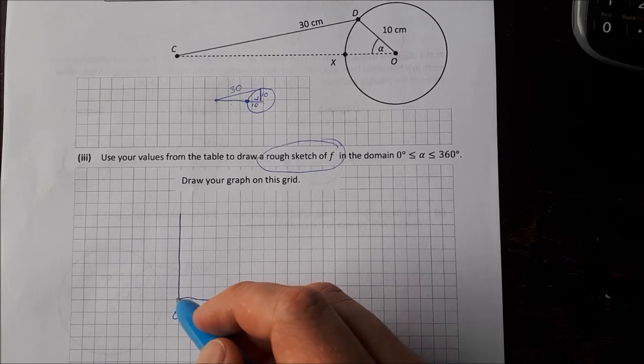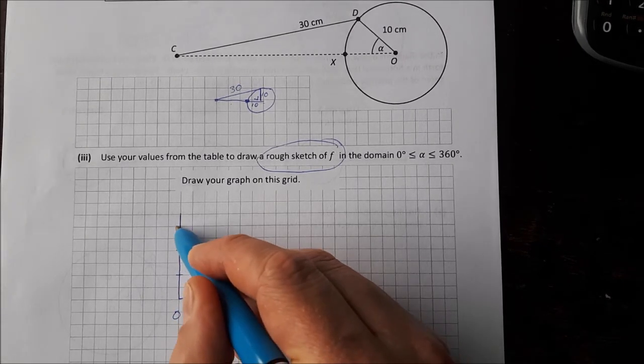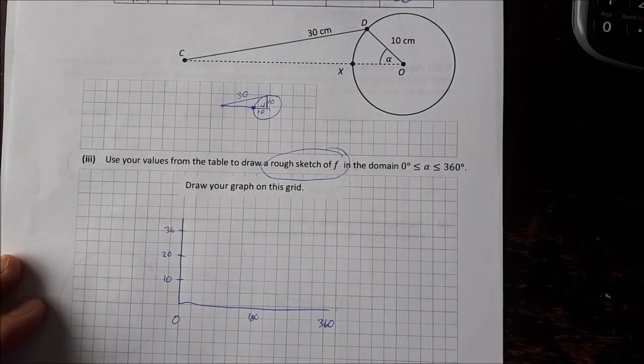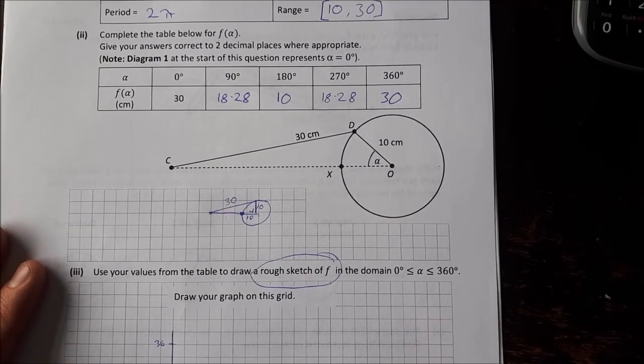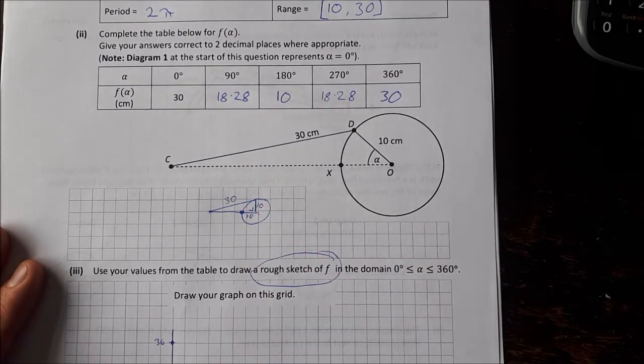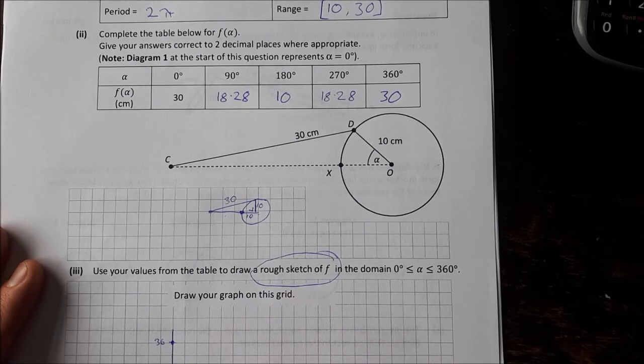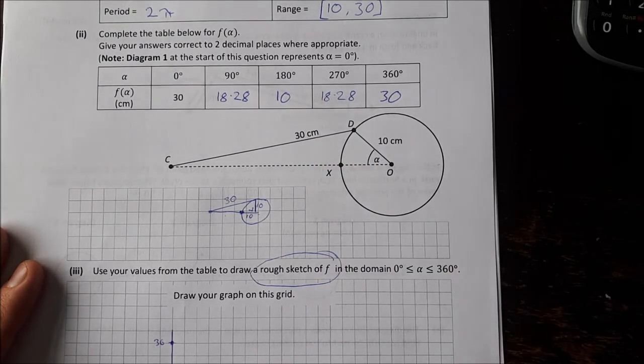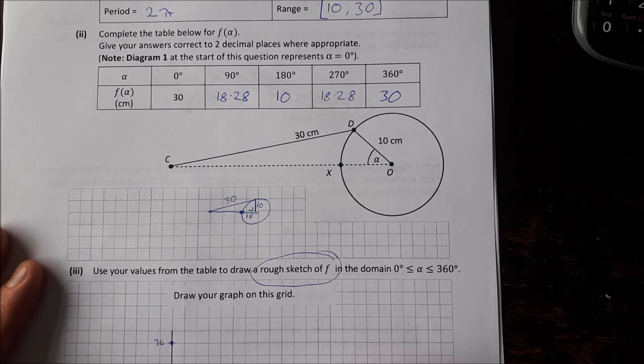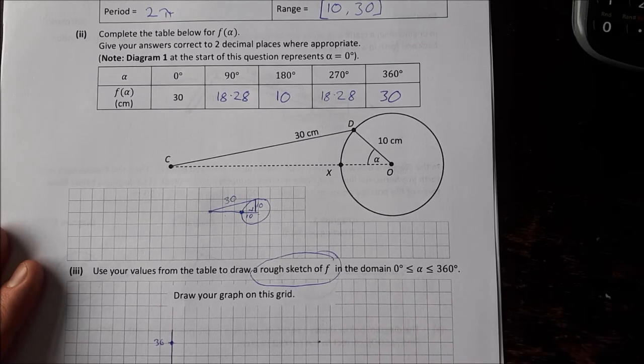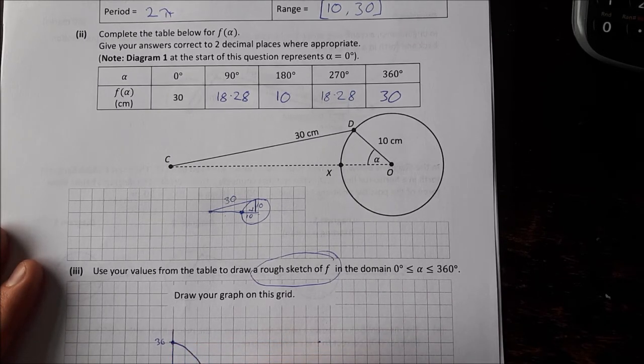We'll have 0 to 360, you could maybe put in 180 then as well. And then here we're going to have to go up as far as 30, so maybe 10, 20, 30. We have our points from above, so we have 0, 30 so that would be here. We have 90, 18.28 so that's 90, 18.28. We have 180, 10. We have 270, 18.28 around about there. And we have 360, 30 around about there. So that's coming down like this and back up like that.